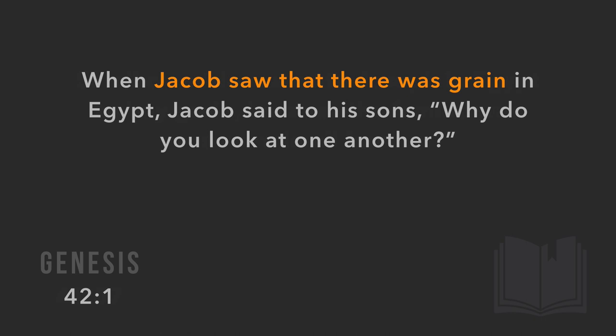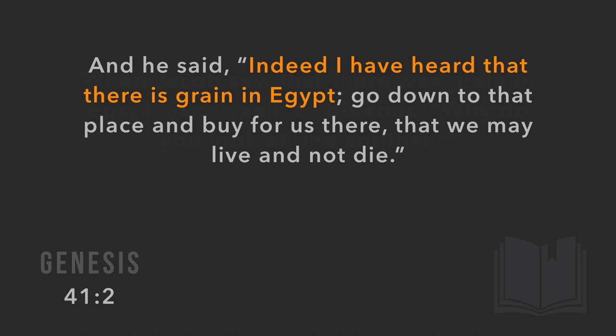When Jacob — who still thinks Joseph has been dead for years — saw there was grain in Egypt, he said to his sons in Genesis 42:1, 'Why are you looking at each other? I have heard there is grain in Egypt. Go down and buy some so that we may live and not die.'